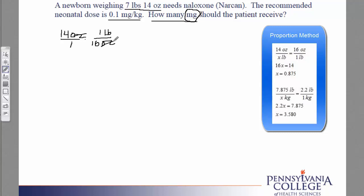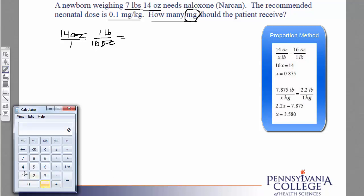We'll cancel the ounces. And in our calculator, we'll take 14 divided by 16. We do not want to round at this point, because this is not a final answer. So 0.875 pounds.